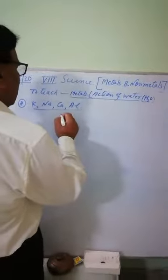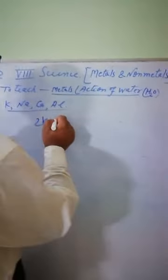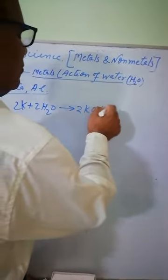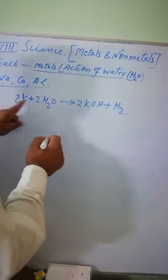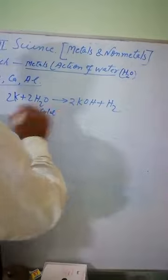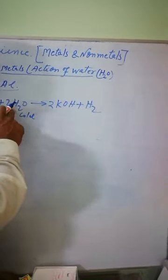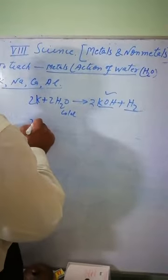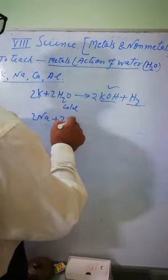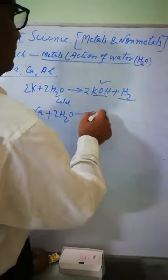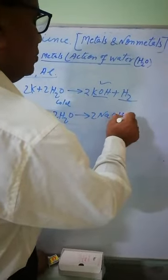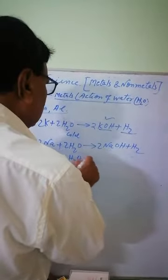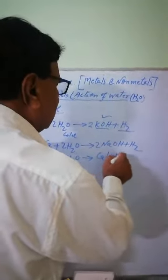Let's see potassium here. I will try to balance it. Potassium reacts with cold water to form potassium hydroxide and hydrogen. Sodium reacts with cold water to form sodium hydroxide and hydrogen. Calcium reacts with cold water to form calcium hydroxide and hydrogen.